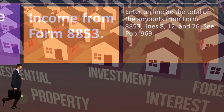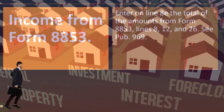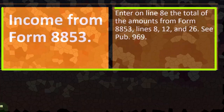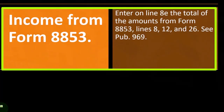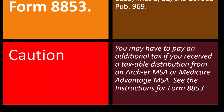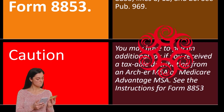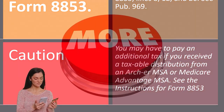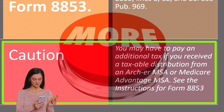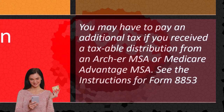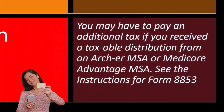Line 8e — income from Form 8853. Enter on line 8e the total of the amounts from Form 8853, lines 8, 12, and 26. You can see Publication 969 on the IRS website for more detail. Caution: you may have to pay an additional tax if you received a taxable distribution from an Archer MSA or Medicare Advantage MSA — so that's another specialty area.